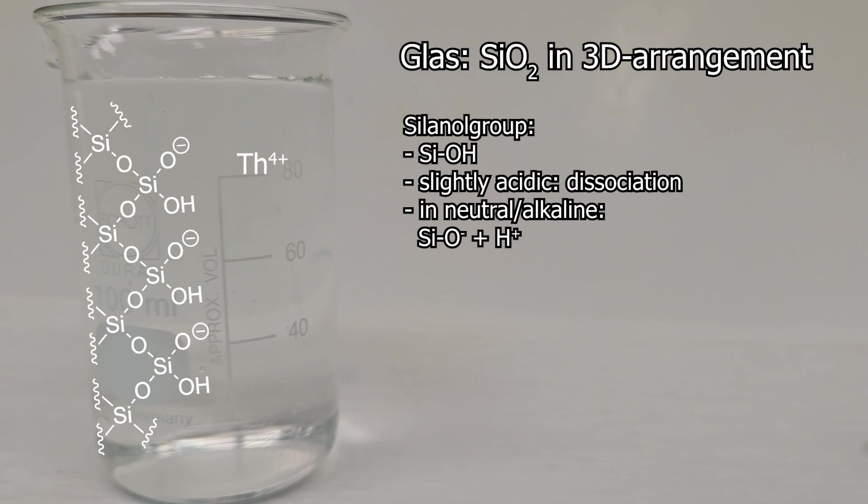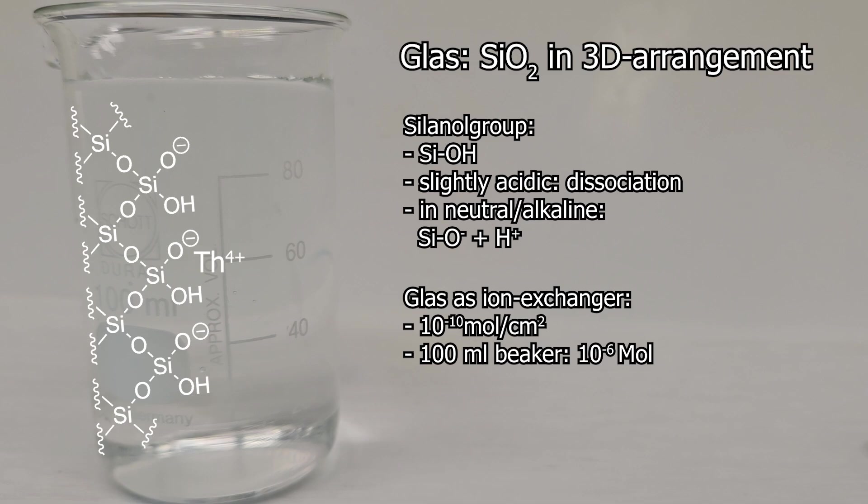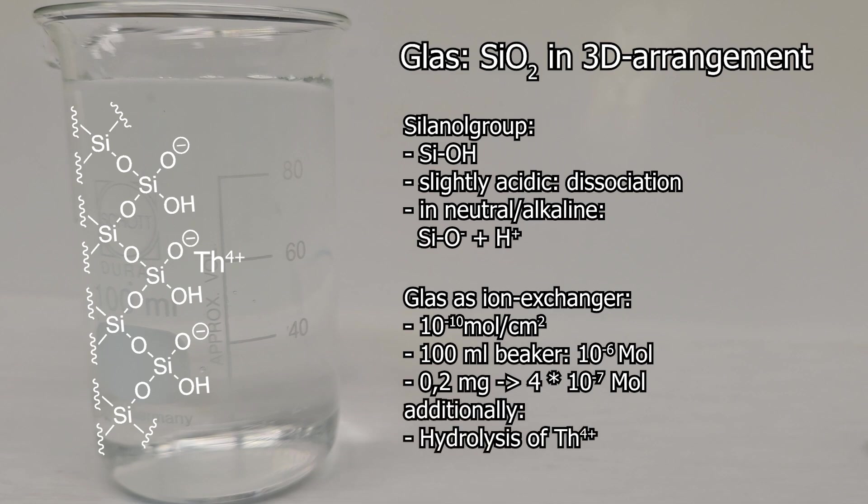Such a glass has an ion exchange capacity of 10 to the power of minus 10 moles per square centimeter. This means that the inside of the entire 100 milliliter beaker has a capacity of 10 to the power of minus 6 moles. 0.2 milligrams divided by 232 grams per mole equals 4 times 10 to the power of minus 7 moles. The ion exchange capacity of the glass is 10 times higher than the concentration of our thorium ions.